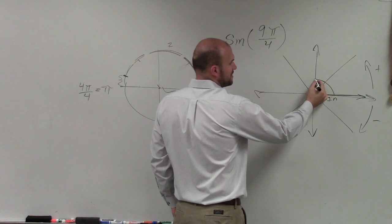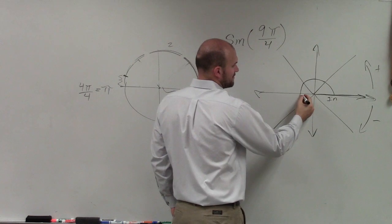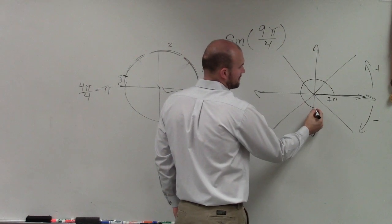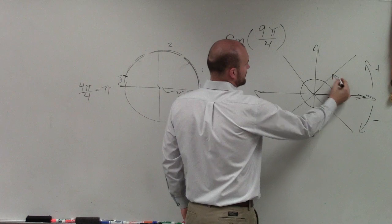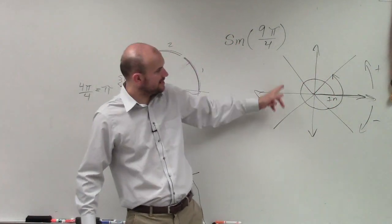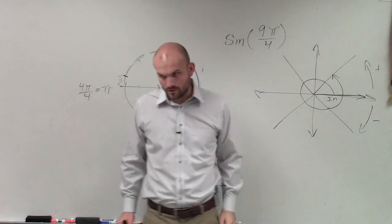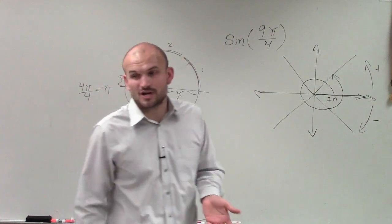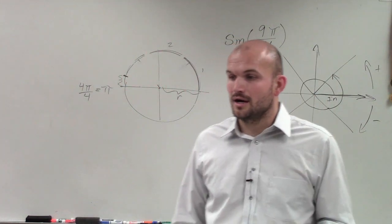Let's count them: 1π over 4, 2π over 4, 3π over 4, 4π over 4, 5π over 4, 6π over 4, 7π over 4, 8π over 4, 9π over 4. We start at our initial side and rotate around to 9π over 4. Now our angle is in the first quadrant.